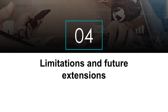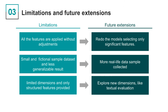Lastly, we will introduce the limitations and future extensions of this project. Currently, all features are applied without adjustment; in the future, we can redo the models selecting only significant features. Another limitation is that since we have a small and fictional sample dataset, we can only have less generalizable results — more real-life data samples should be collected. The third limitation is that we only have limited dimensions and structured features are provided. For future work, perhaps we can explore new dimensions, for example textual evaluations, for a more complete analysis.